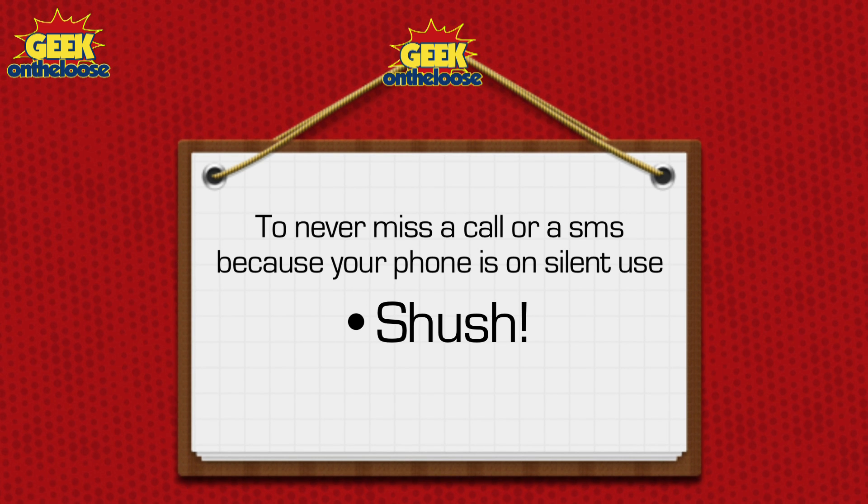I press the Shush button and it says 'Ringer Shush till 2:35,' which means that within 45 minutes, as soon as my meeting gets over, even if I forget, my phone will automatically switch from silent mode to normal mode. So never ever miss any important phone calls, messages, or hot crushes who call you once in a blue moon — download Shush today.